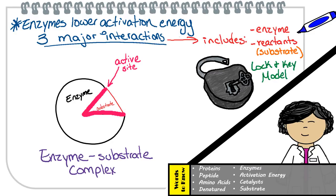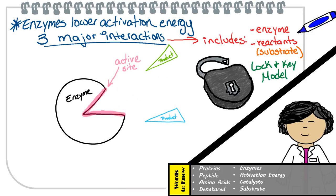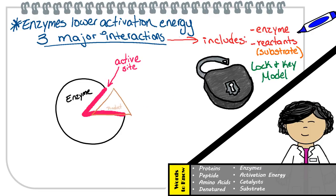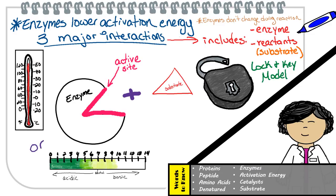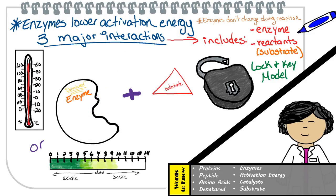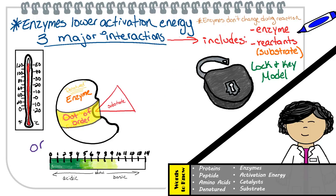Enzymes and substrates can be seen as a lock and key — there's actually a scientific model known as the lock and key model, which explains how enzymes work. An enzyme's active site is substrate specific, and when they bind at that location, they form the second interaction known as the enzyme-substrate complex, which is where the reaction actually takes place. Since the bonds become weaker in this complex, less activation energy is needed for these slightly weakened bonds to be broken. Once the reaction finishes, the enzyme can separate from the products. Since enzymes are proteins, they can become denatured if not maintained in their optimal environment — if denatured, they lose their shape, meaning the substrate and enzyme will no longer fit and the enzyme is no longer functional.